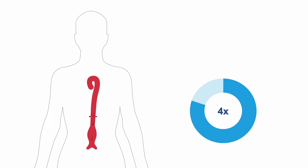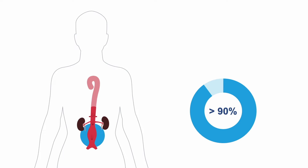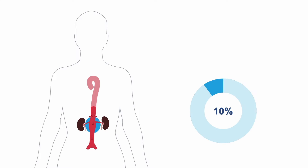Aortic aneurysms are four times more common in the abdomen than in the chest. These are called abdominal aortic aneurysms, or AAAs. More than 90% of AAAs occur below the renal arteries, referred to as distal abdominal aortic aneurysms, or distal AAAs. 10% of AAAs involve the renal arteries — these are called juxtarenal AAAs — and require a special surgical intervention to preserve blood flow to the kidneys.